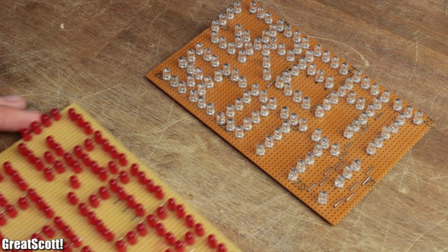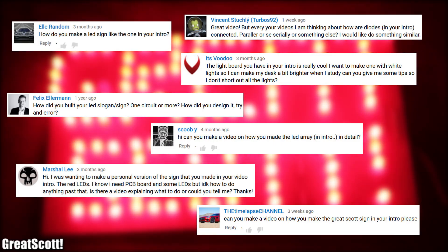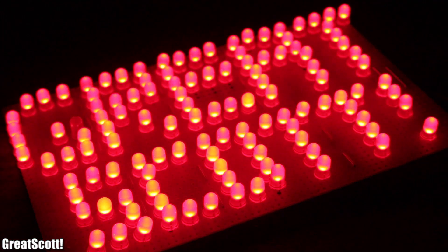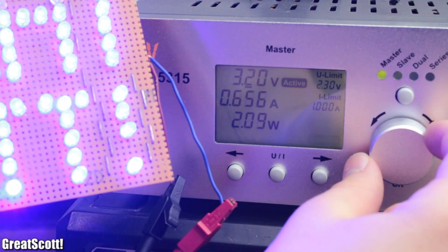Ever since I started creating electronics videos, there's been one repetitive question: How did you make the LED sign in your intro? And the answer is super simple: dozens of LEDs soldered in parallel and powered by a constant voltage source.